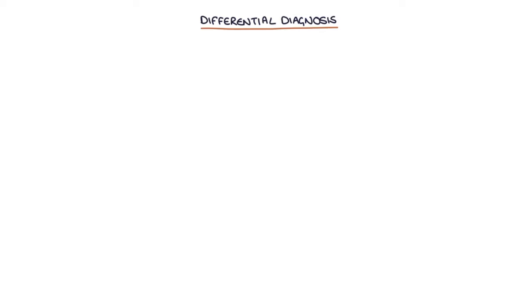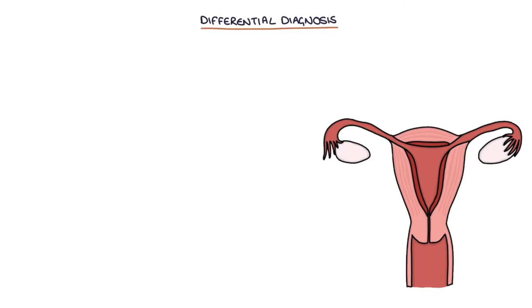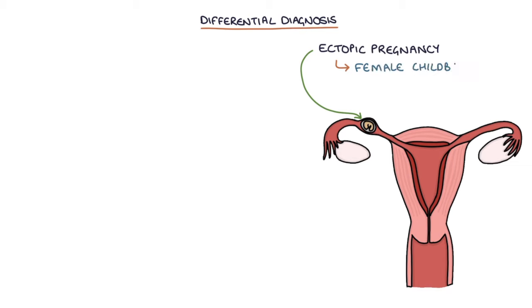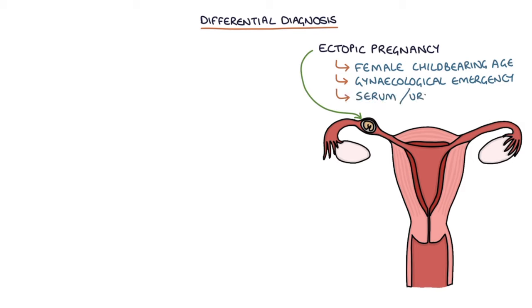Let's talk about the key differential diagnoses of appendicitis. Firstly, ectopic pregnancy. Consider ectopic pregnancy in females of childbearing age — this is a gynecological emergency with a relatively high mortality if mismanaged. Performing a serum or urine human chorionic gonadotropin, or HCG, can be used to exclude pregnancy, and this is essential in any female of childbearing age presenting with unilateral pelvic pain.